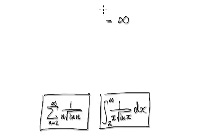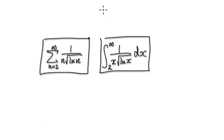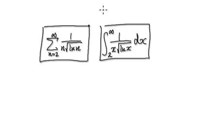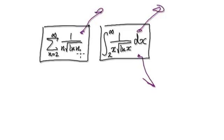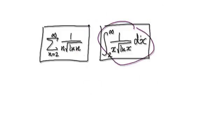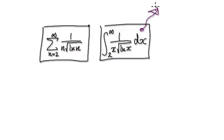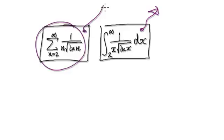So going back to our theorem: the theorem says that if the integral diverges, then the series also diverges; and if the integral converges, then the series converges. We've just established that this integral diverges. Therefore, this series itself will diverge.